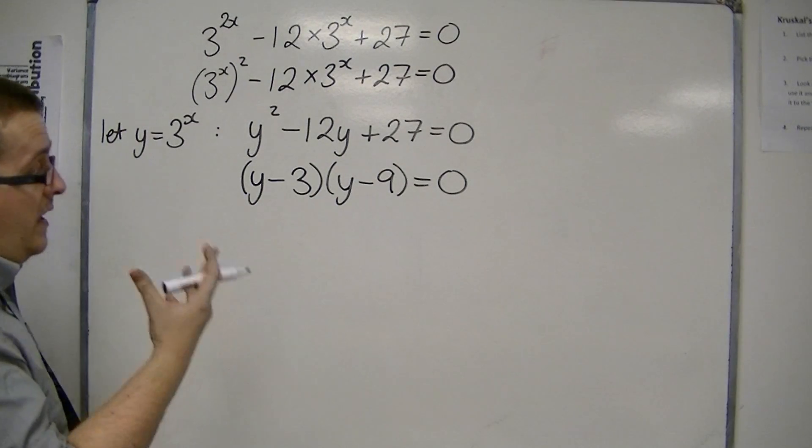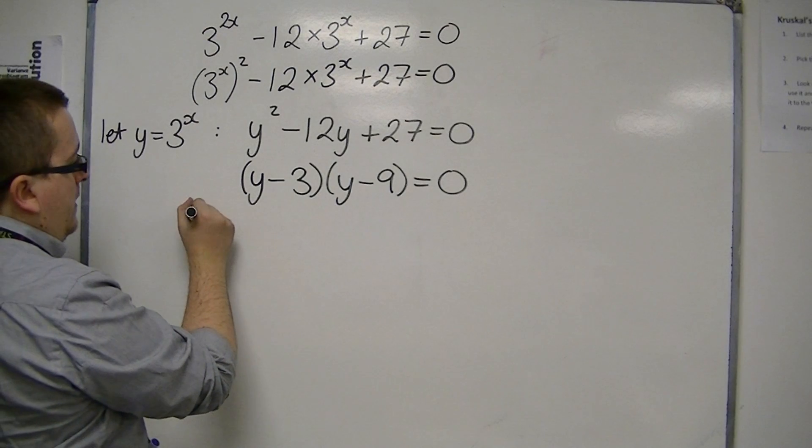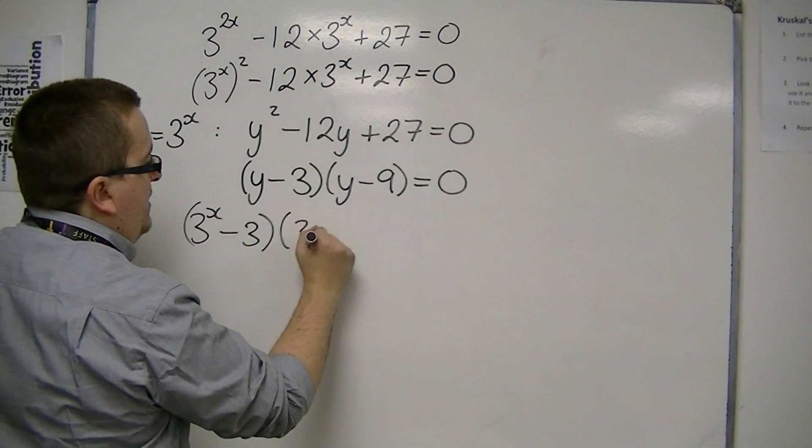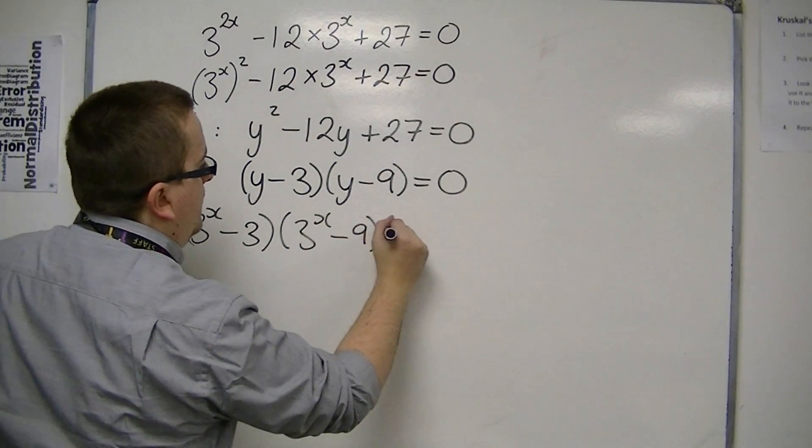Or, if I put the 3 to the x back in, then I've got 3 to the x minus 3, 3 to the x minus 9 is 0.